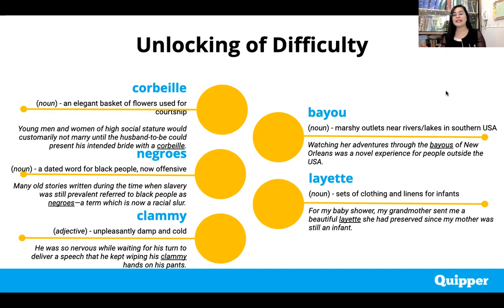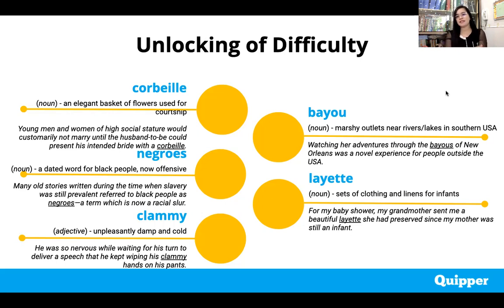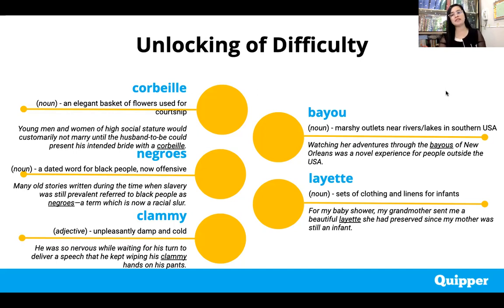A layette refers to blankets, clothing, and linens for infants. Babies are quite fragile, so you need to put some clothing or soft linens so their skin is not rubbed directly against rough objects. Those are our vocabulary words for today. We will encounter them in our literary texts for further reading, enriching your vocabulary.